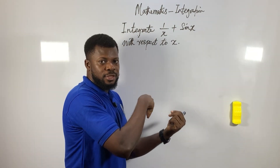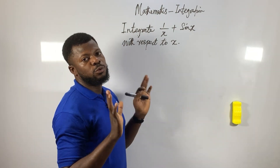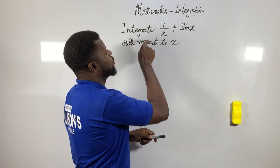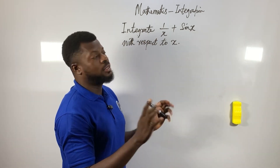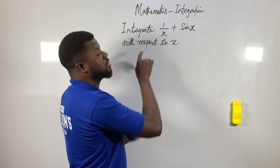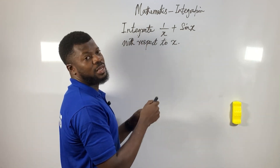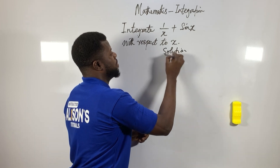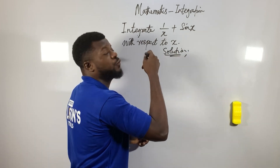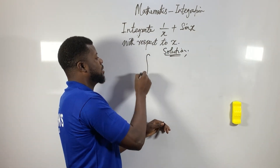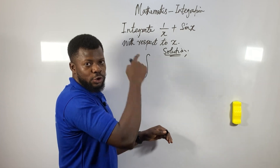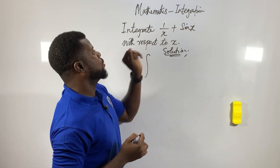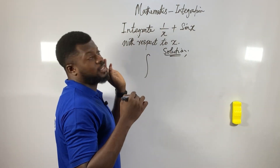First thing you need to know: integral, integration, integrate — they all mean the same thing. Now let me use my hand to interpret. The way we write it, the first thing is this sign — this elongated S like this — and that elongated S represents integration, or integrate, or integral.